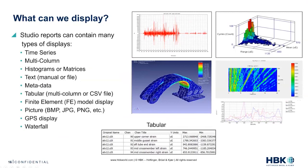A time series plot lets you quickly eyeball your data to make sure there are no strange features. We can then analyse it and produce histogram plots — in this case a rainflow plot showing range and mean. We can also put FE plots on there for CAE work, applying realistic loads to give life or vibration-type analysis. For rotating machinery, we have a waterfall plot. At the bottom, we can create tables of information, focusing on the data that's relevant to us.